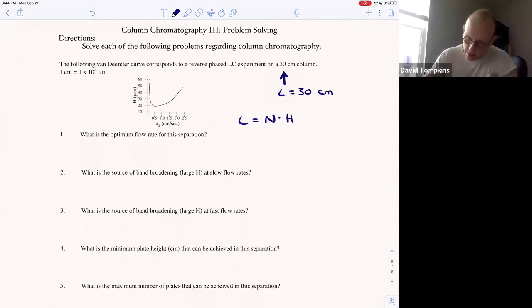So then you're also given the plate height as a function of linear flow rate, which are the Van Deemter axes, and here a conversion factor of one centimeter which is 10,000 micrometers.